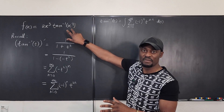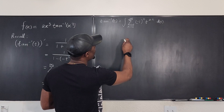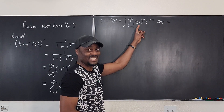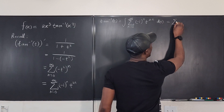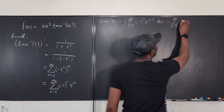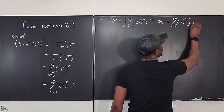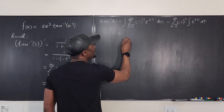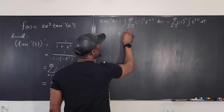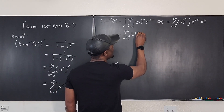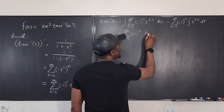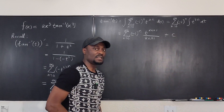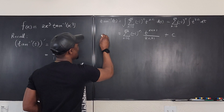The integral of t^(2n) gives t^(2n+1)/(2n+1), so the result is the sum from n=0 to ∞ of (−1)ⁿ · t^(2n+1)/(2n+1) + C. What we have just obtained is arctan(t).